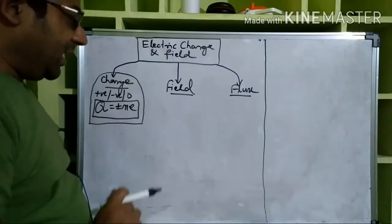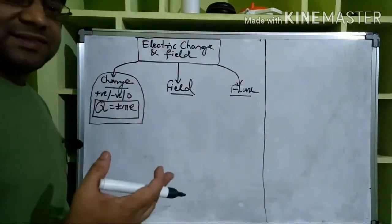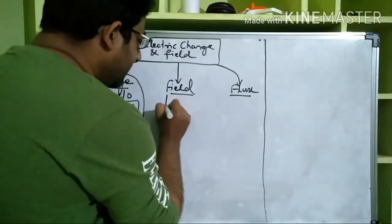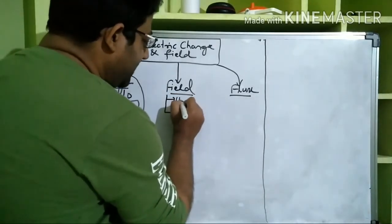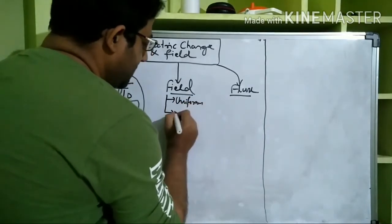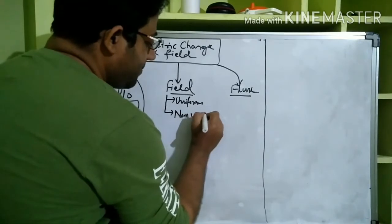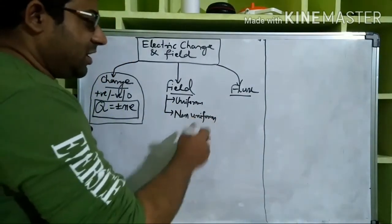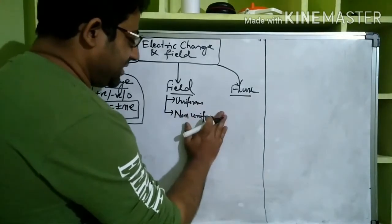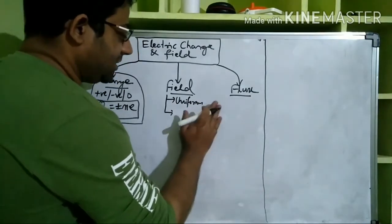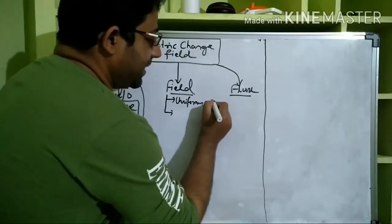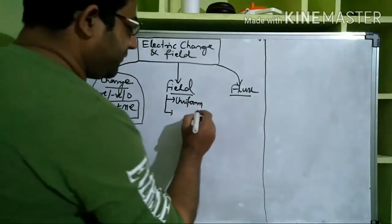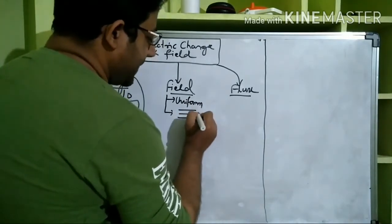Regarding the field, before going into field strength or field intensity, we noted that a field can be uniform or non-uniform. For uniform, instead of writing many words, you may just draw field lines that are parallel and equidistant from each other — that symbol alone reminds you what uniform means.